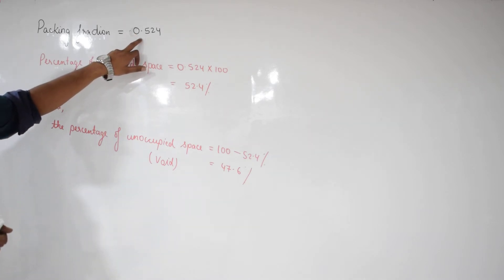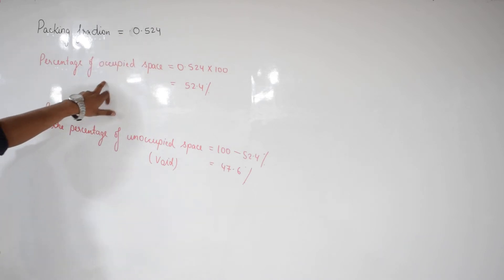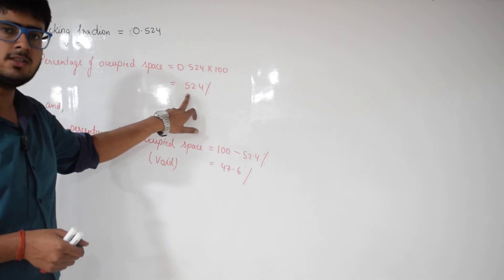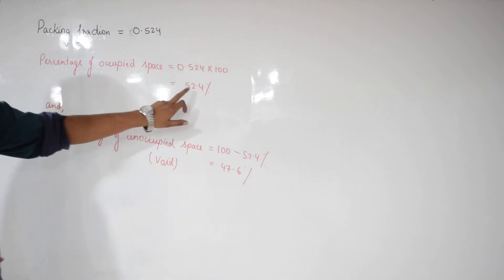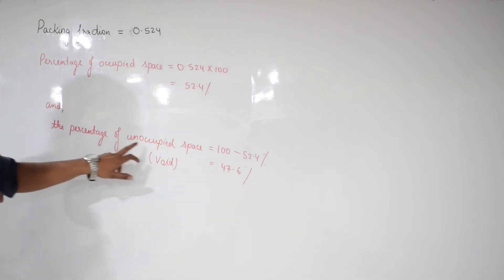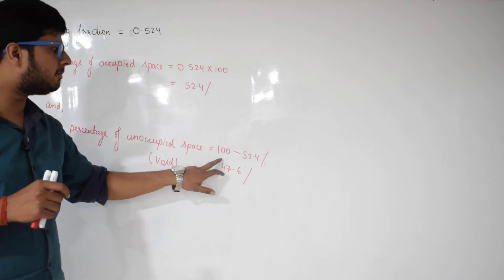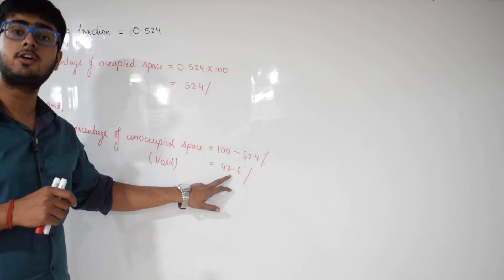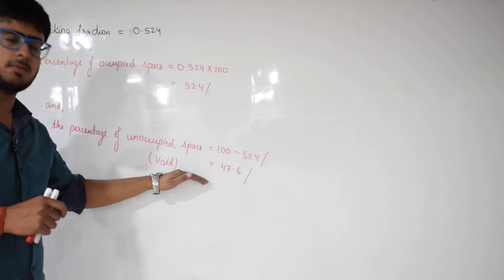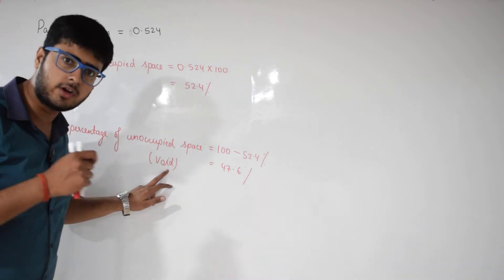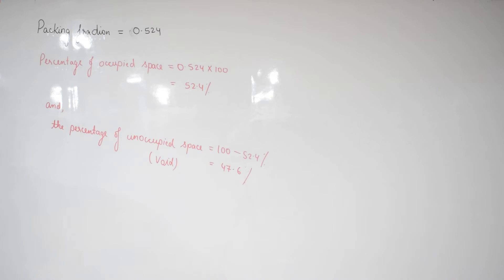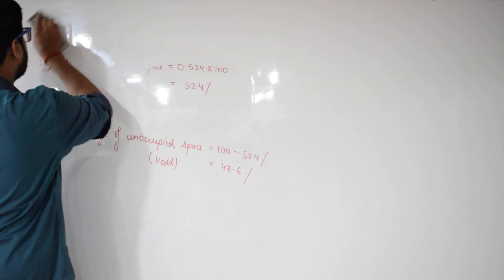So, in the case of a simple cubic or primitive unit cell, the packing fraction is 0.524. The percentage of occupied space is 52.4 percent and the percentage of unoccupied space or void is 47.6 percent. These unoccupied spaces are also known as voids or interstices.